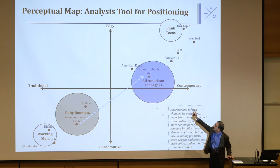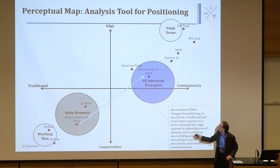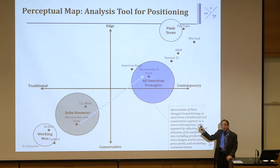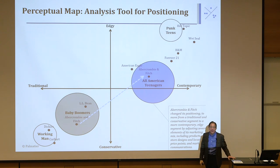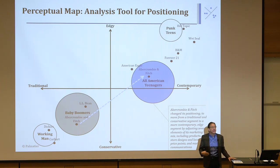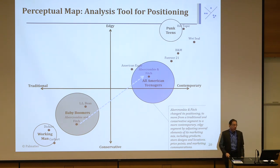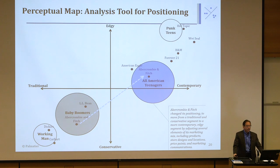You can see all the different competitors in those four segments on the map. This is only in two dimensions — typically you need three or four positioning maps because the market usually has more than two attributes customers care about. But you can see how this is a good tool for dealing with positioning.